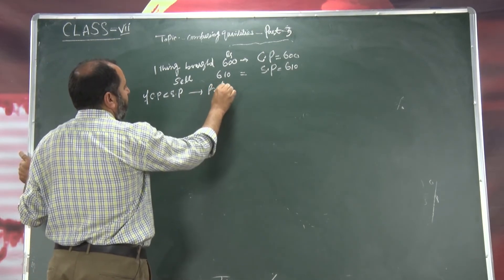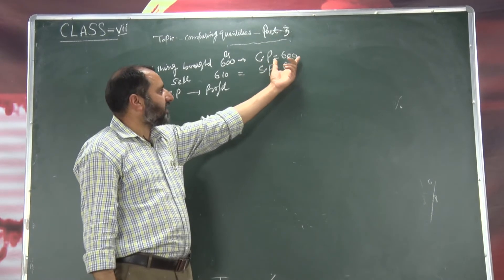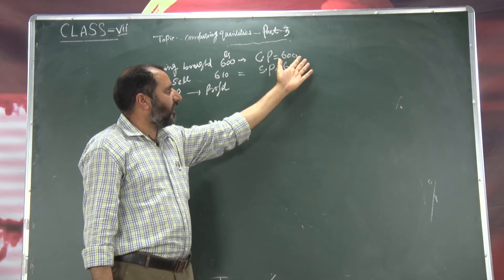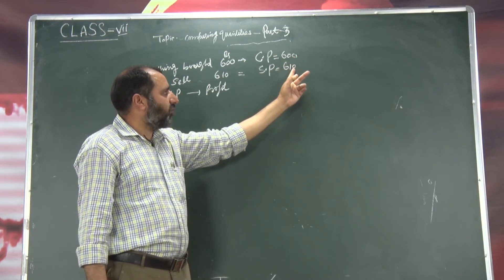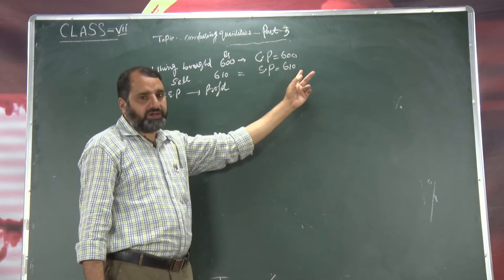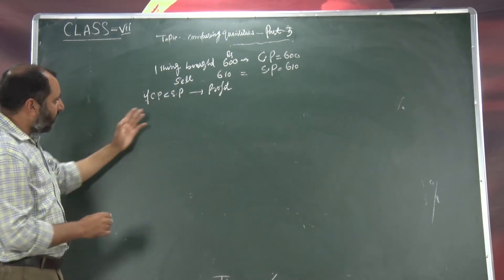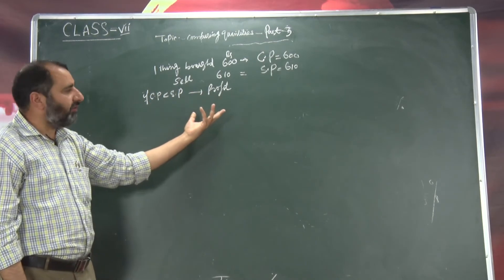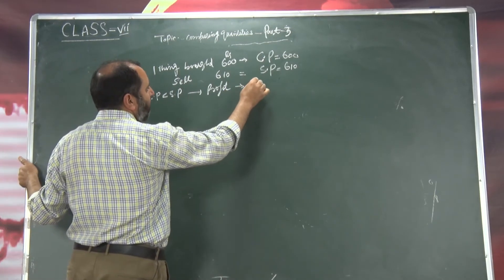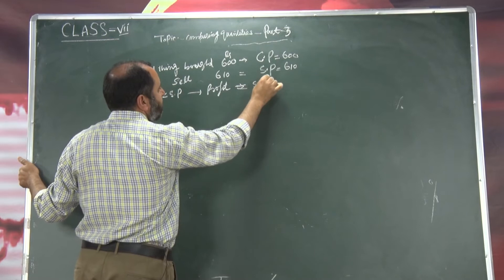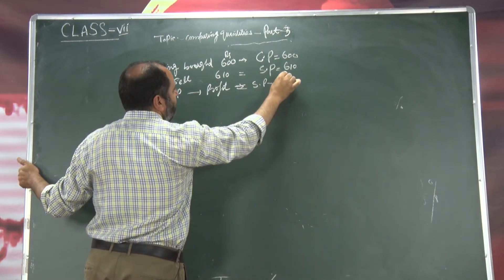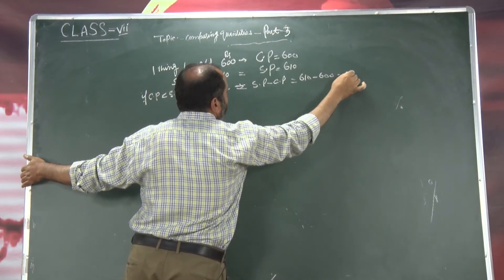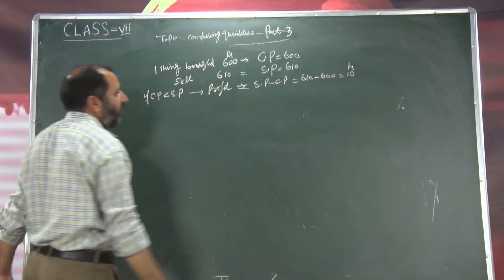Wahaan aya hai profit — kyunki yahan dekhiye, agar humne cheez kharid liya hai 600 mein, bheej diya hai 610 mein, to yahan 10 rupees zyadha hai — 10 rupees means profit. Ab yahan mathematically kya hai: if CP less than SP, to wahaan you made a profit. Profit kis ke barabar hota hai — profit is equal to SP minus CP. Ab dekhe, yahan SP kya tha: 610, CP kya tha: 600. Jab isko subtract karingi — yahan aya hai 10 rupees. 10 rupees aya hai humara profit.